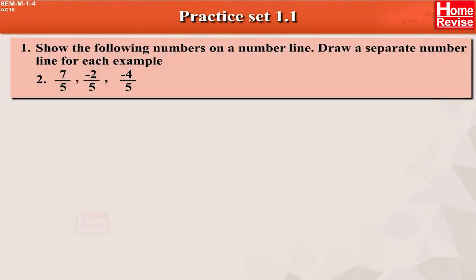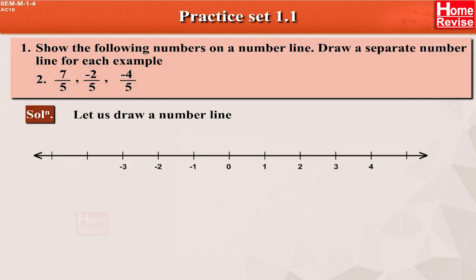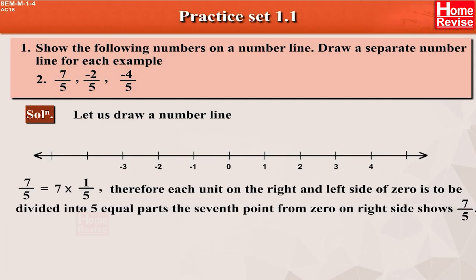Problem 2: 7 upon 5, minus 2 upon 5, minus 4 upon 5. Solution. Let us draw a number line. 7 upon 5 is equal to 7 multiplied by 1 upon 5. Therefore, each unit on the right and left side of 0 is to be divided into 5 equal parts. The 7th point from 0 on the right side shows 7 upon 5.